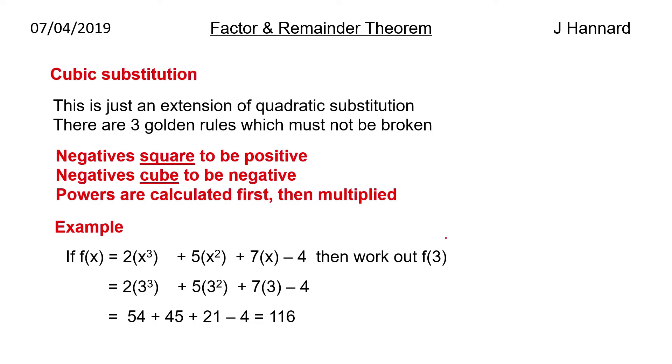So if we have an example, f of x equals 2x cubed plus 5x squared plus 7x minus 4, then work out f of 3. So everywhere you see an x you stick a 3. So we've got 2 times 3 cubed plus 5 times 3 squared plus 7 times 3 minus 4 and then as you see expanded out you've got 116.